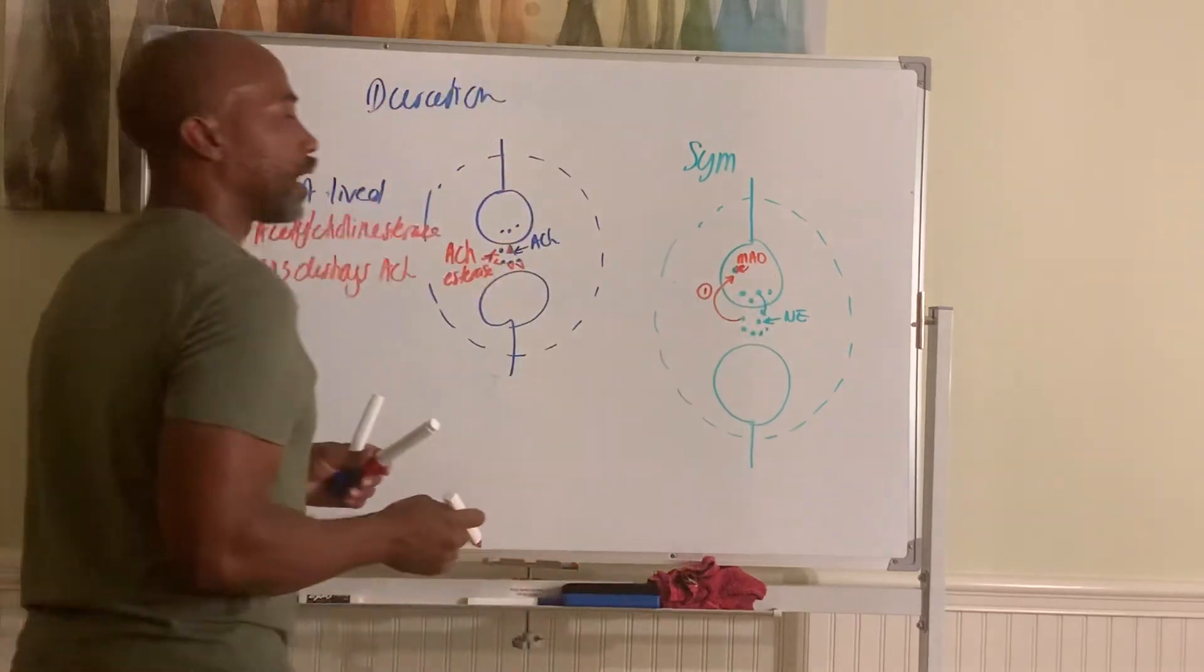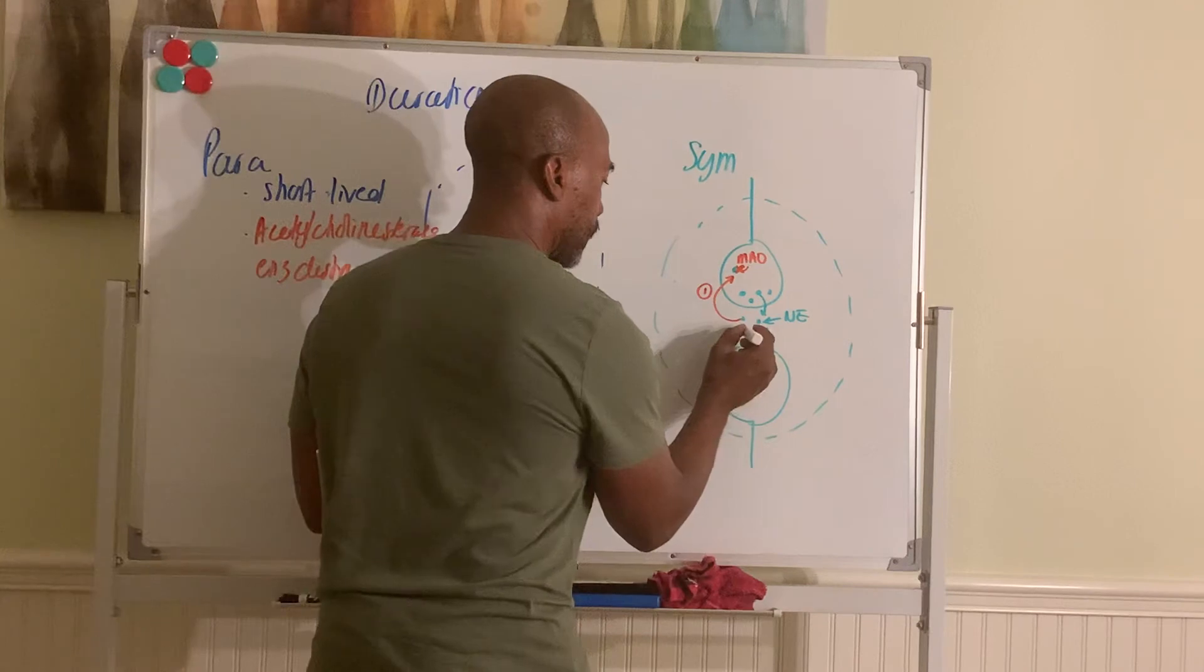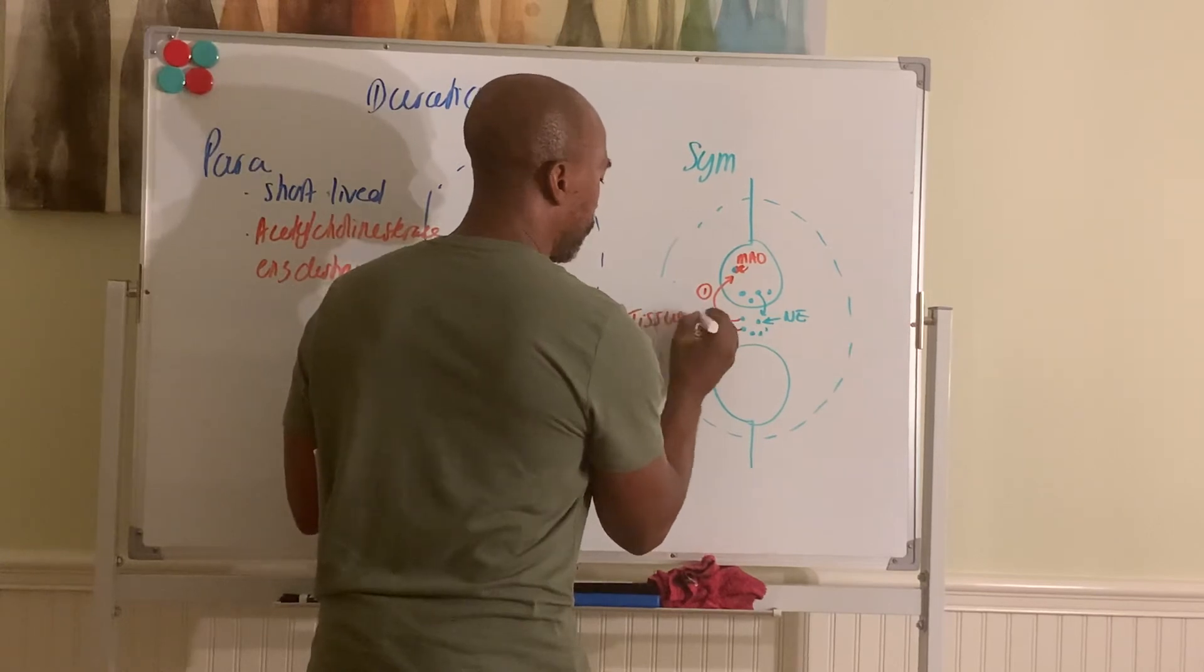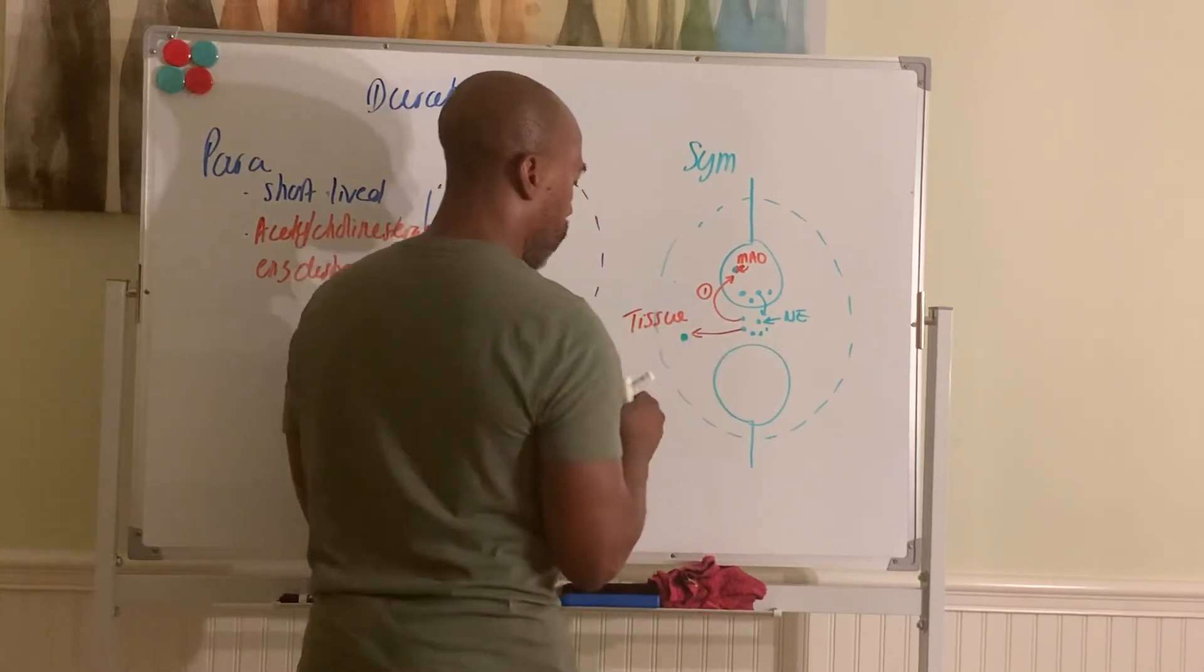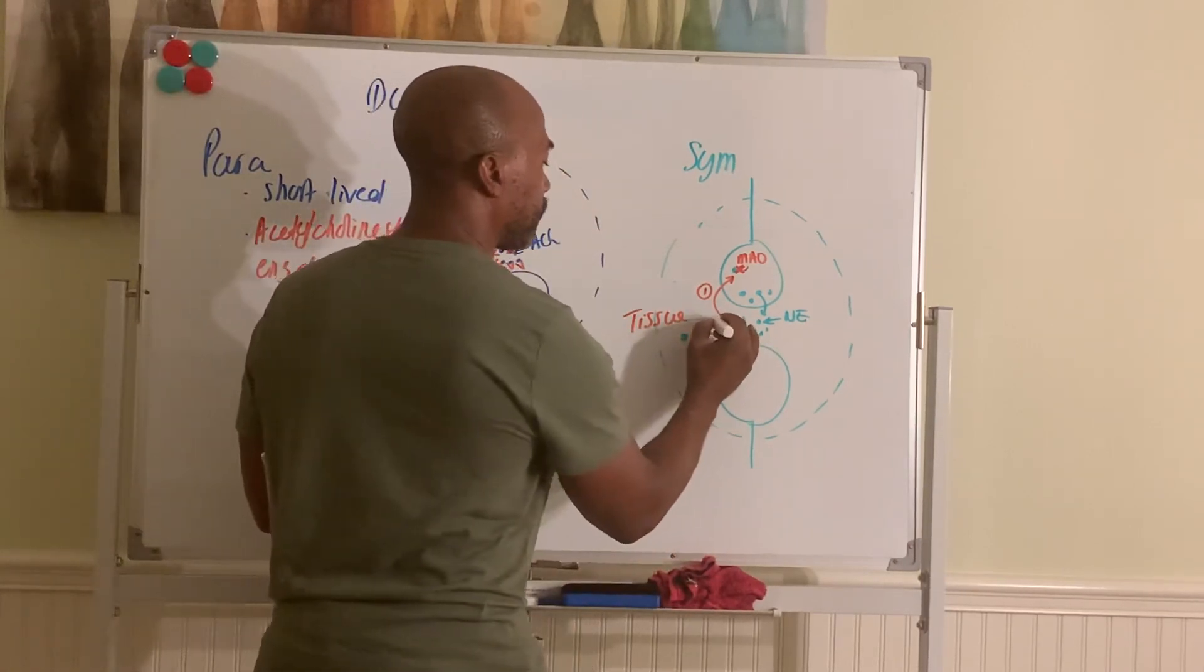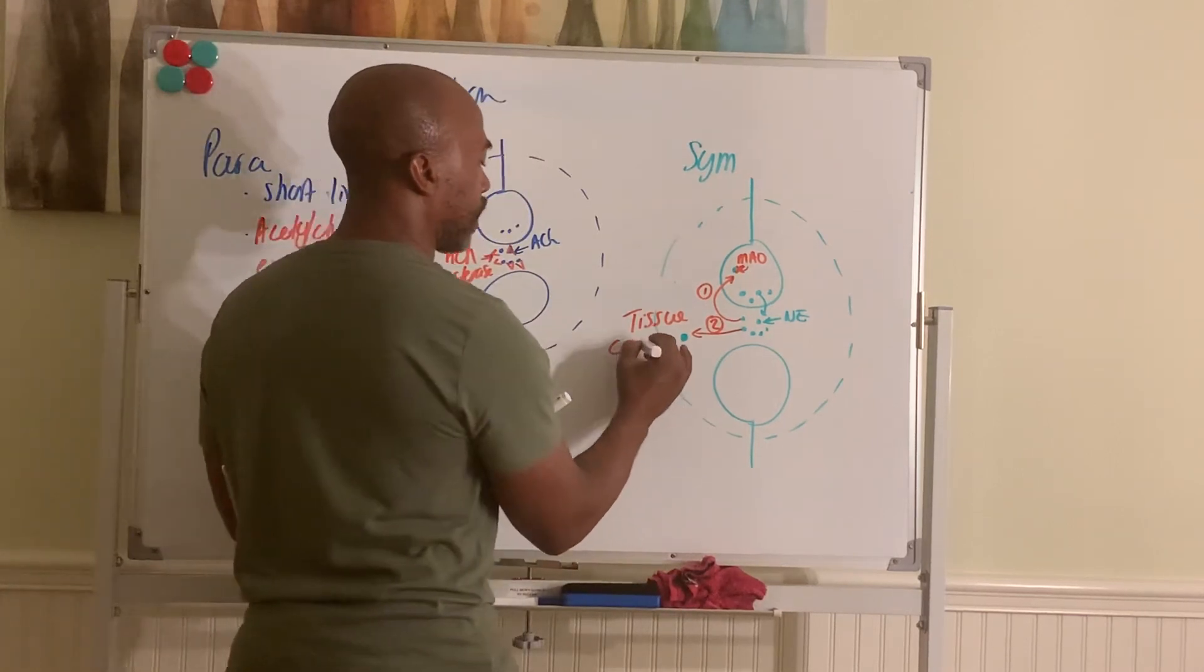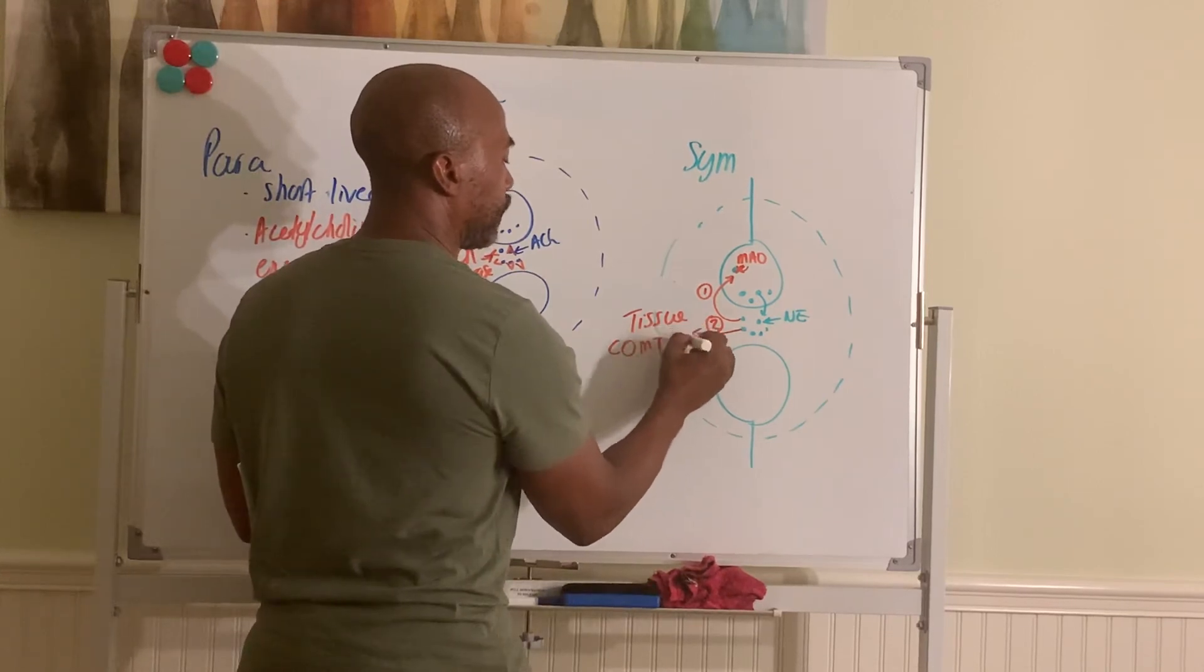Another option is that it can diffuse out into the tissue. Into the tissue with another enzyme called COMT, catecholamine methyl transferase. COMT. That enzyme will destroy it for you.